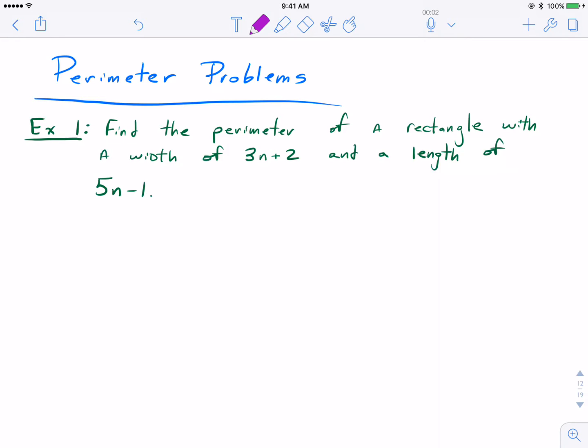Hello everybody! In this video we're going to take a look at a perimeter related problem, applying it to combining like terms and polynomial concepts. The problem asks us to find the perimeter of a rectangle that has a width of 3n plus 2 and a length of 5n minus 1.